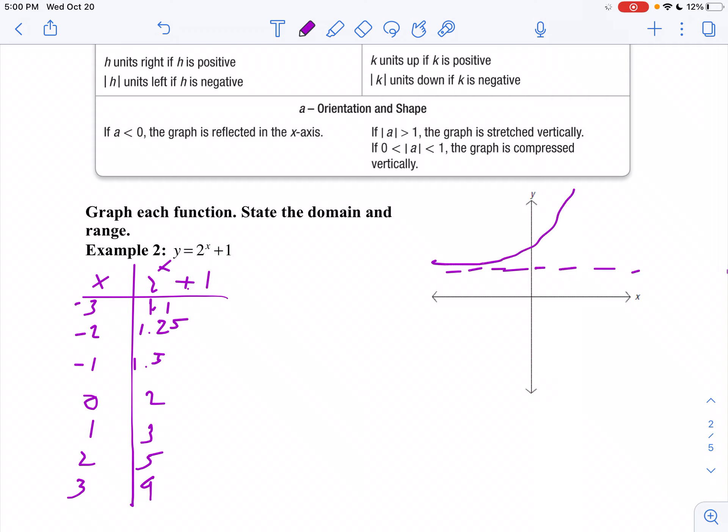And my graph looks like that. And so now my domain is all real numbers. My range starts at 1, so we're going to say y is greater than 1.